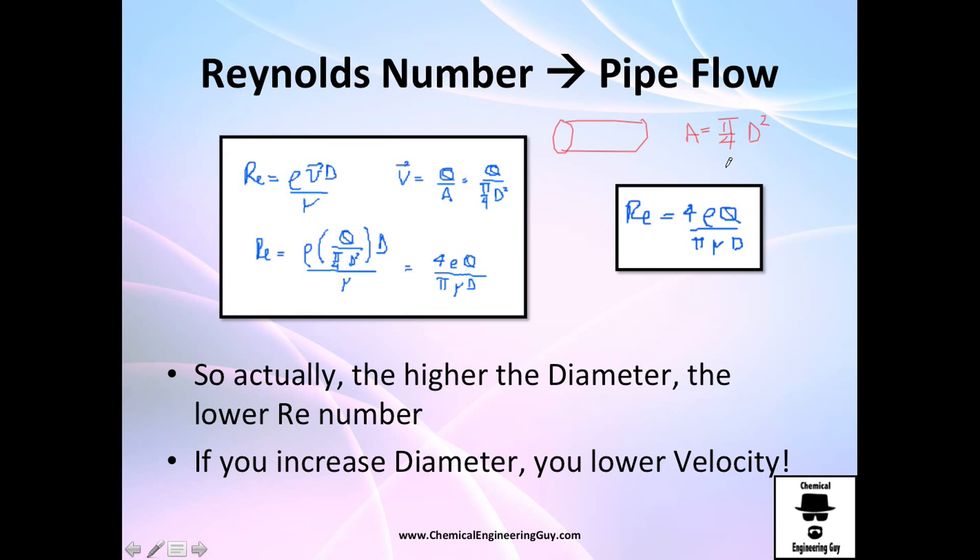Many times we're not given the diameter or we're given the velocity instead of the volumetric flow rate. So how to relate this velocity with respect to this? Just do this: it's the Q volumetric flow rate, the area as I told you before is right here.